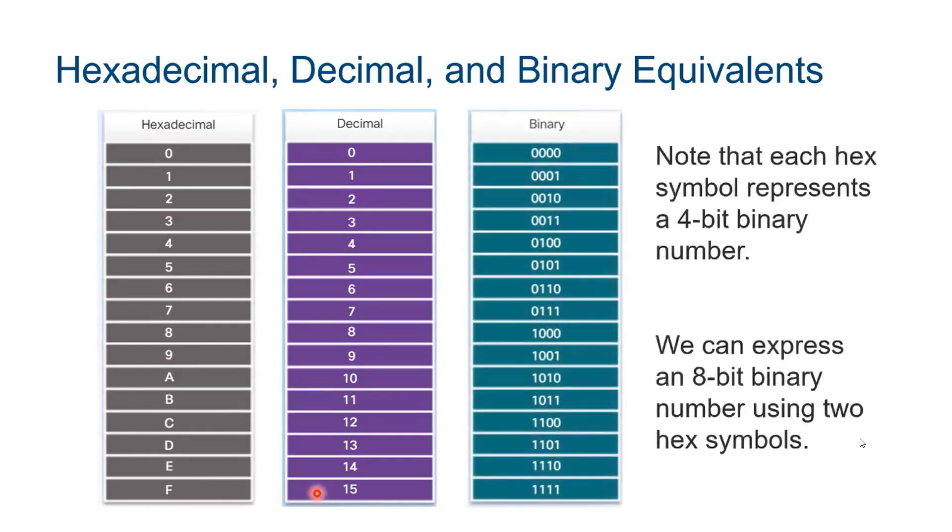Here are the binary equivalents. Note that each hex symbol can be used to represent a 4-bit binary number. Given that 8 bits is a common binary grouping, we can represent an 8-bit binary number using just two hex symbols.